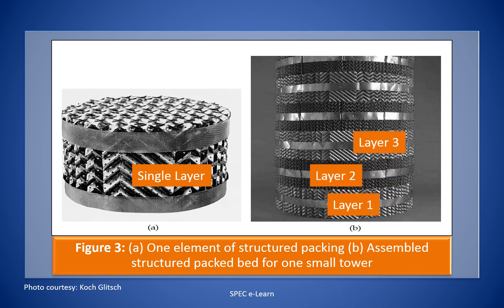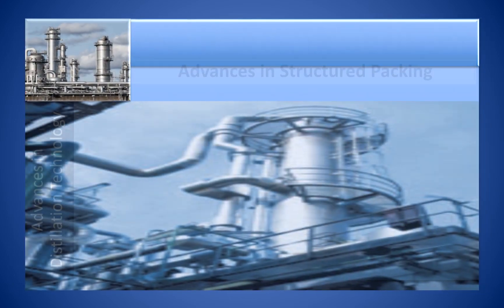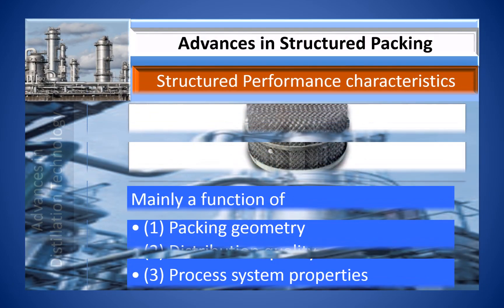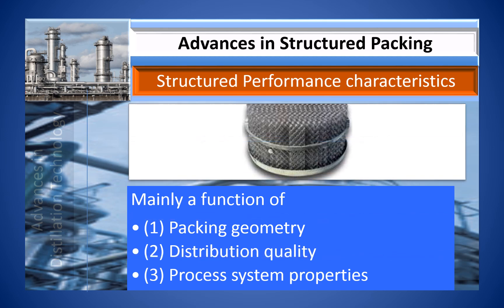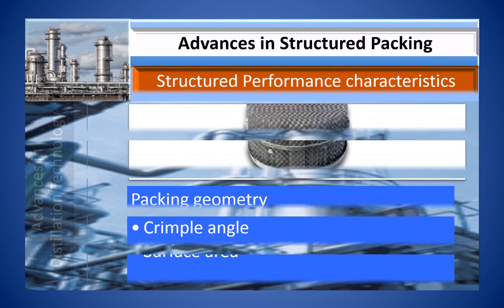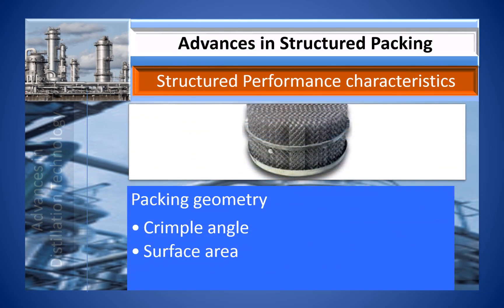On the right you can see an assembled bed of packing consisting of five layers. When we discuss structured packing, it is important to learn what characteristics influence separation performance. Characteristics of structured packing are mainly a function of packing geometry, distribution quality, and process system properties. Packing geometry is determined by two factors: crimp angle and surface area of packing.